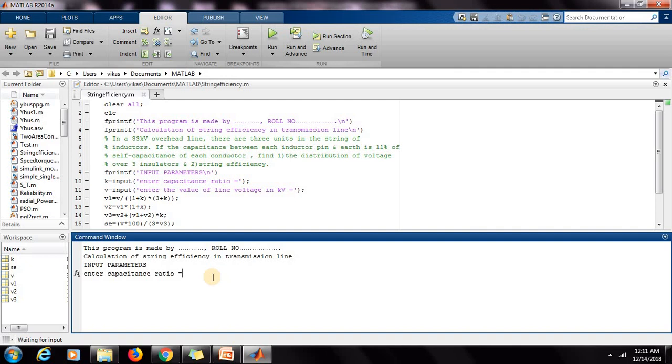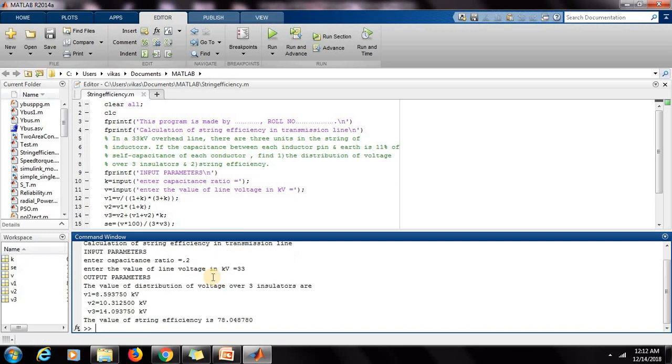Again, if I am increasing the value of K, let us consider it as 0.2, and the value of line voltage will remain same around 33 kV. Now see that string efficiency is 78%, and you can see that distribution: 8, 10, and 14. So clearly it can be concluded that by decreasing K, string efficiency can be increased.